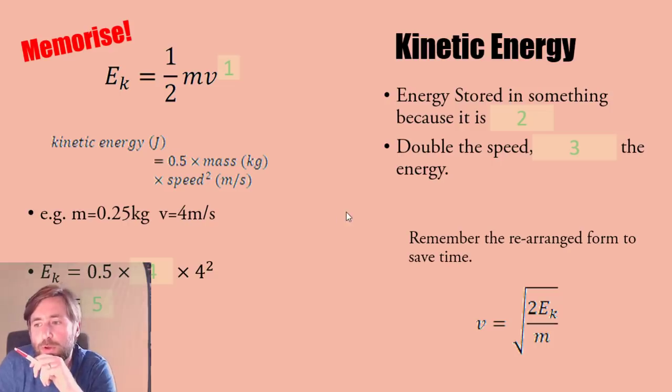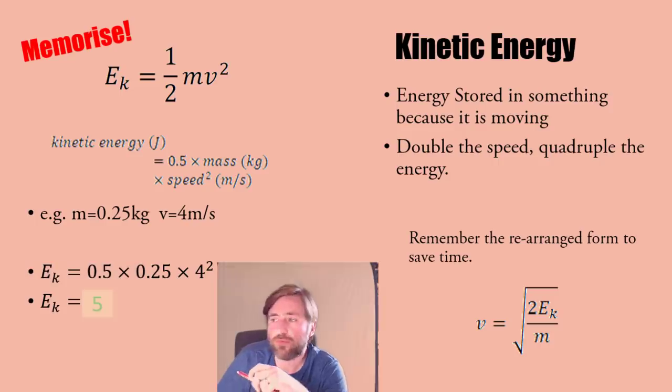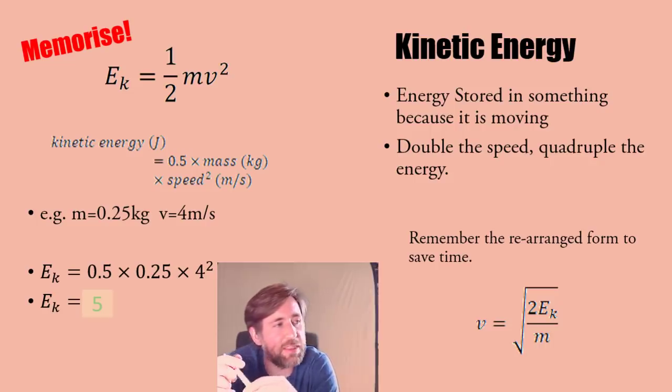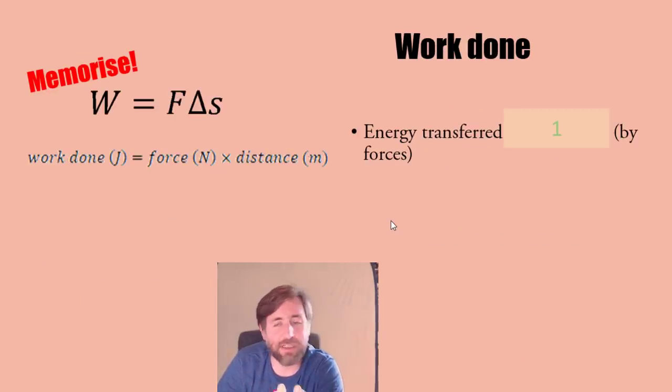Kinetic energy - what people often miss is the squared on the kinetic energy equation. Don't forget the squared. Remember that one half MV squared. Kinetic energy is energy stored in something because it's moving - double the speed quadruple the energy. Mass is always in kilograms, speed in meters per second. I would suggest you remember the rearranged form: speed is root 2EK over M. If you remember that, you don't need to do rearranging in the exam.